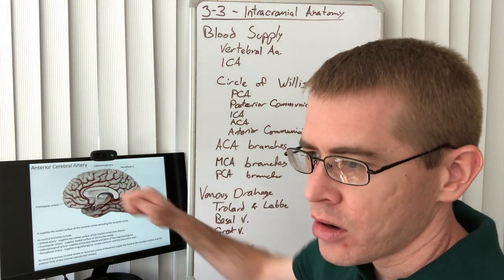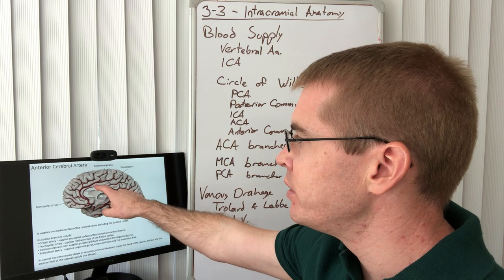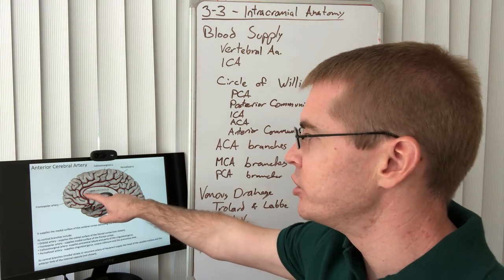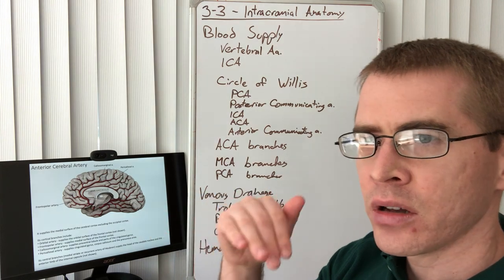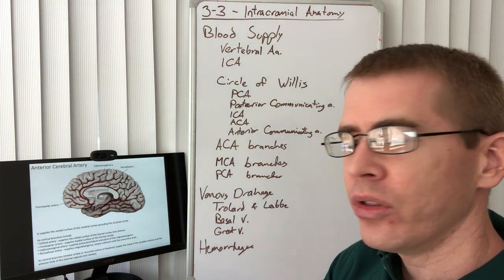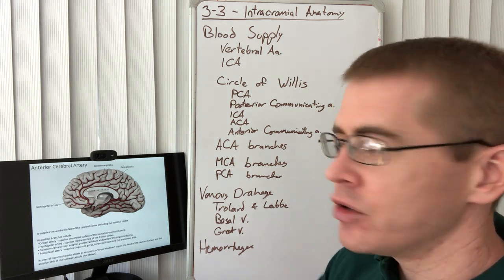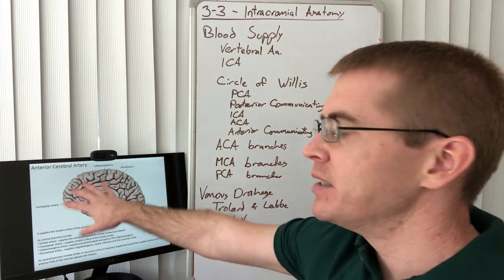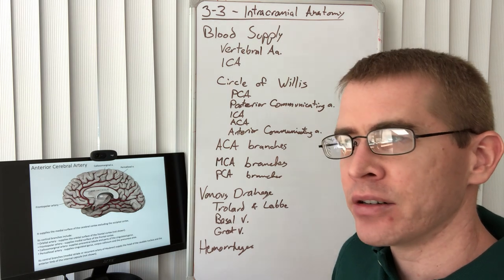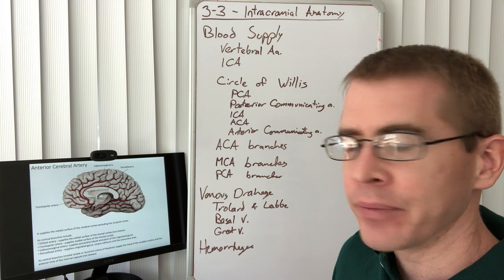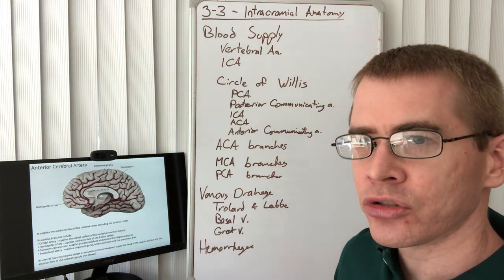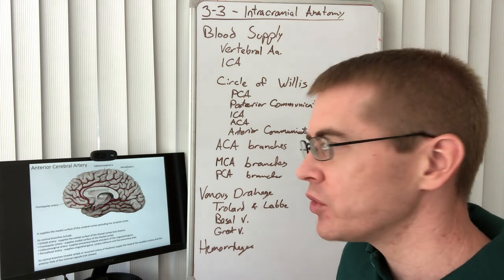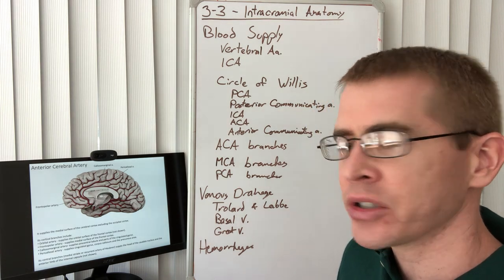Continuing along, we have the callosomarginal artery, which is just above the cingulate gyrus, and the pericallosal artery, which runs just above the corpus callosum. You may not yet know the names of these different gyri — in a later lecture we'll identify all of these different regions of the brain and their functionality. The brain is very uniformly structured across individuals, so each bump and groove is analogous between individuals, allowing us to name them consistently.